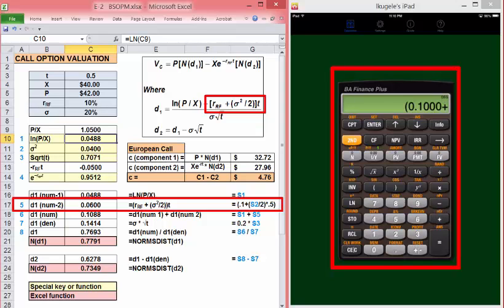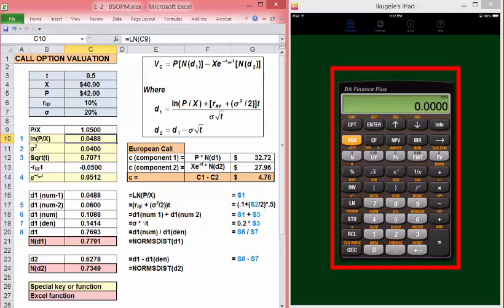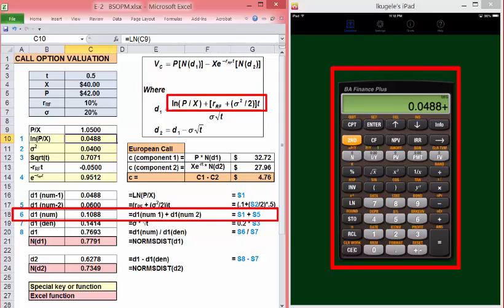Recall 2, divided by 2, close parens, times 0.5. And let's store that in 5. The d1 numerator is simply recall 1 plus recall 5.